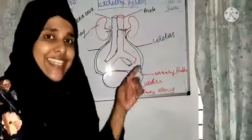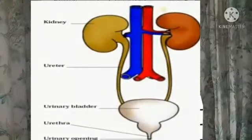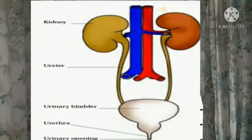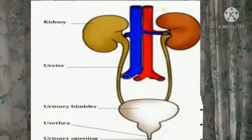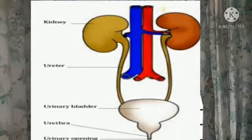Let's check the functions one more time. The function of the kidneys: kidneys make urine by filtering waste and extra water from the blood. The ureters are two tube-like structures that connect the kidneys and the urinary bladder together. The urinary bladder stores the urine produced by the body. And the urethra: urine is passed out through the urethra.